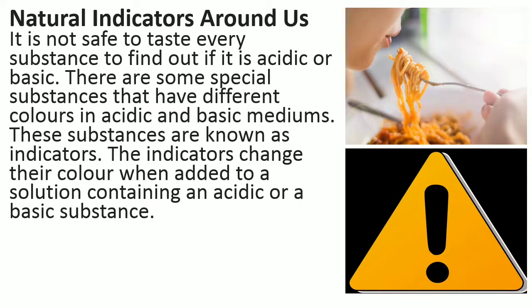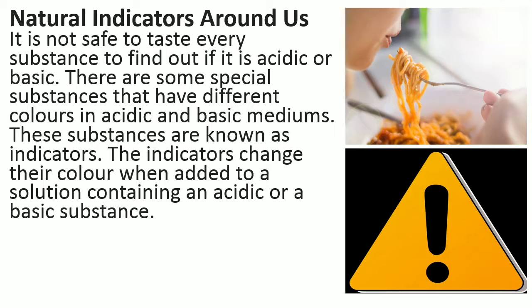So you should not taste anything because it can be poisonous or toxic. In this case indicators are a life saver. Now many indicators are naturally available to us. Some naturally occurring indicators are litmus, turmeric, china rose petals which is also called gudhal, and red cabbage juice. These indicators show different colours in acidic and basic media and are used to test whether a substance is acidic or basic in nature.